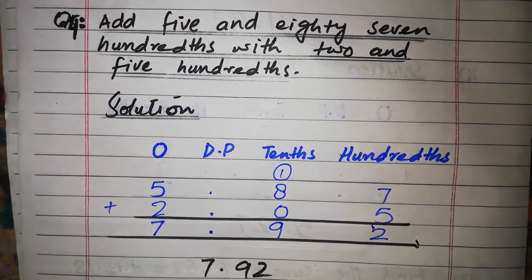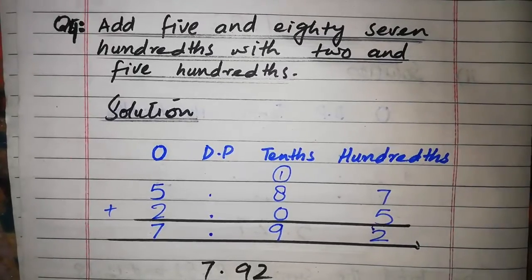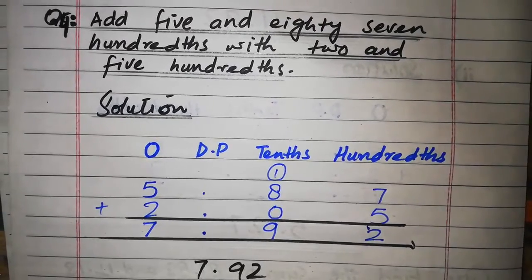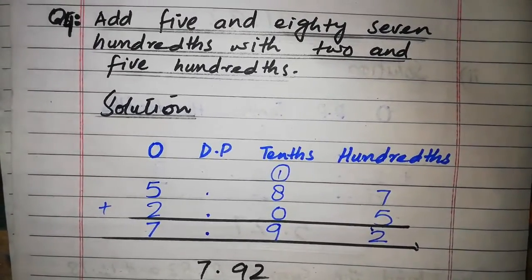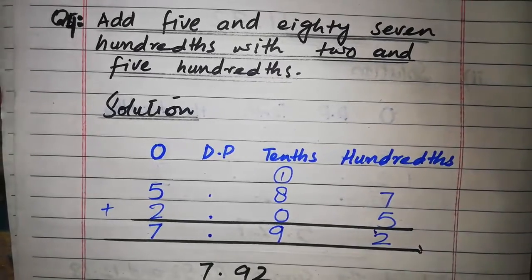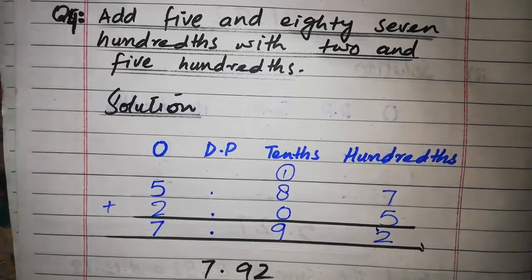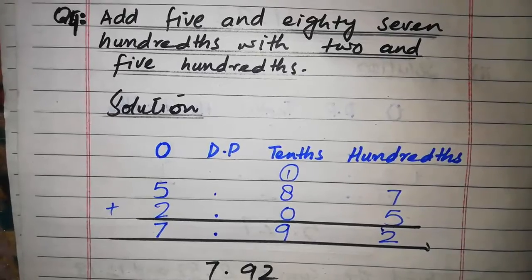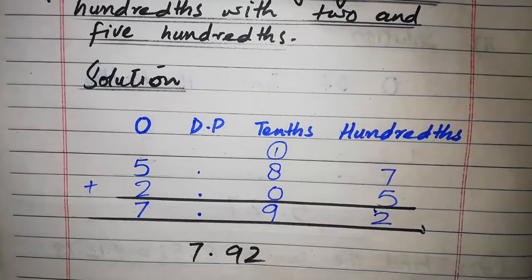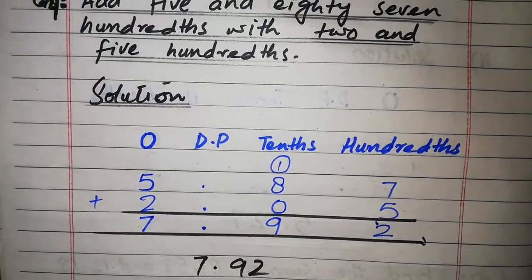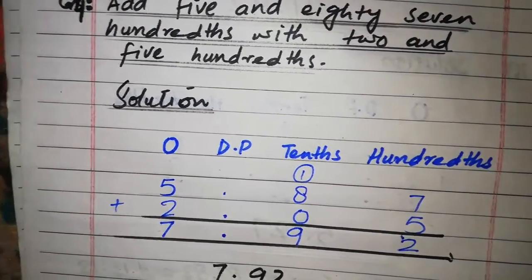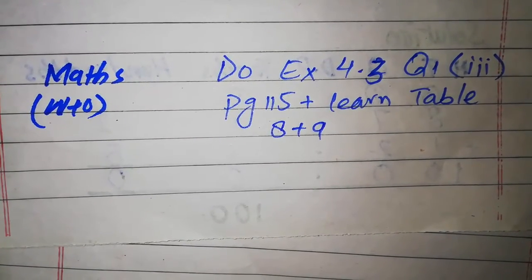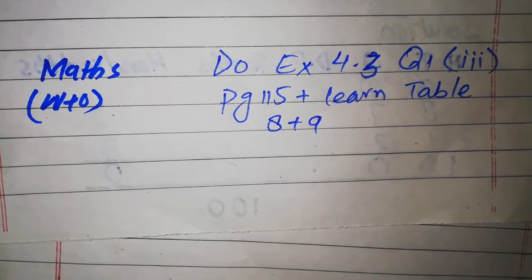یہ تا ہمارے پاس question number 4۔ یہ سارا ہم نے addition of decimals کر لیا۔ Hope آپ کو اس کی سمجھ آئی ہوگی۔ If you have any problem, you can ask۔ Ok، اب اپنا homework note کریں: do Exercise 4.3 question number 1 part 3, page 115, plus learn table 8 and 9.